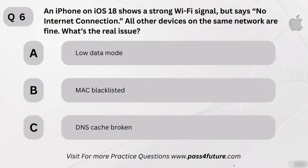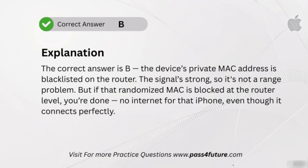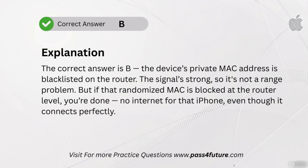Let's go iPhone this time. An iPhone on iOS 18 shows a strong Wi-Fi signal but says no internet connection. All other devices on the same network are fine. What's the real issue? A. Low data mode. B. MAC blacklisted. C. DNS cache broken. The correct answer is B — the device's private MAC address is blacklisted on the router. The signal's strong, so it's not a range problem. But if that randomized MAC is blocked at the router level, you're done — no internet for that iPhone, even though it connects perfectly.